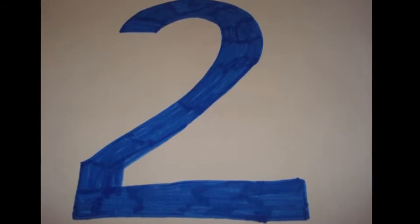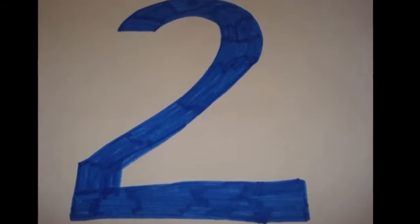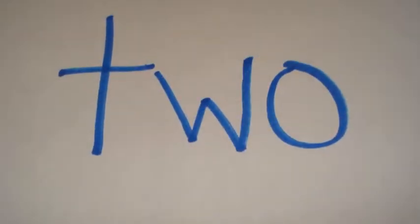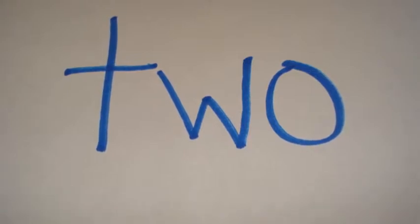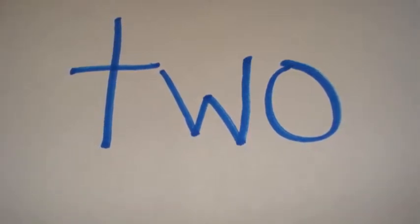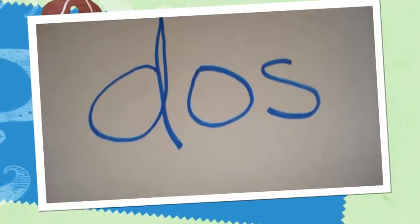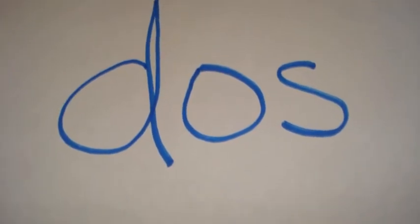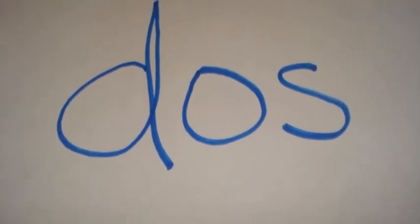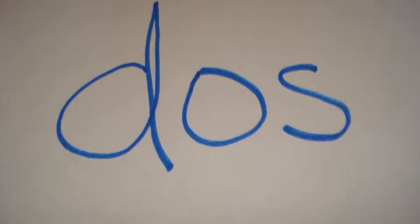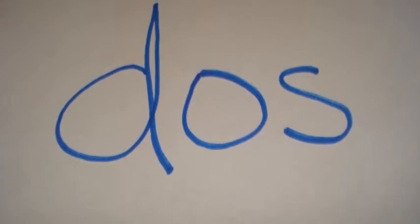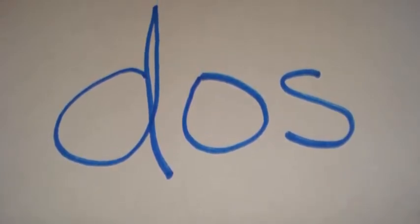Next is the number 2. This is how you spell and say the number 2 in English: 2, T, W, O, 2. This is how you spell and say the number 2 in Spanish: Dos, D, O, S. Dos.